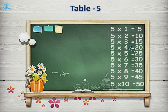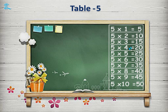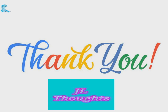5 1s are 5. 5 2s are 10. 5 3s are 15. 5 4s are 20. 5 5s are 25. 5 6s are 30. 5 7s are 35. 5 8s are 40. 5 9s are 45. 5 10s are 50.